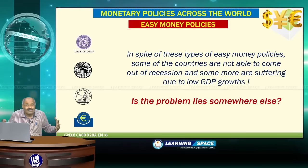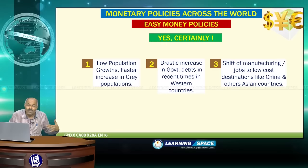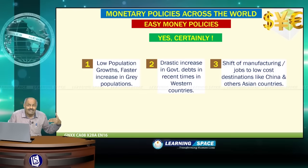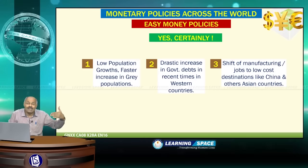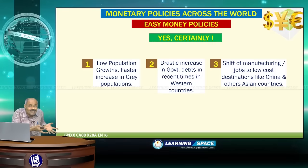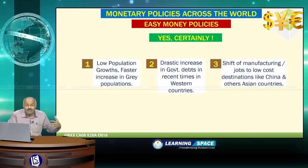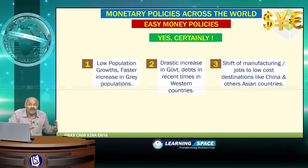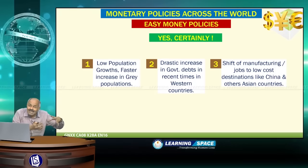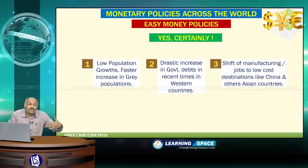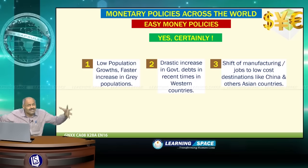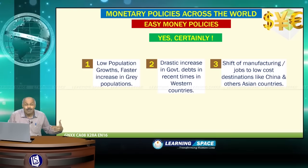The reasons why advanced economies are not growing despite easy money policies include: lower population growth and a rapidly increasing grey population; a drastic increase in government debts in western countries; and the shift of manufacturing and jobs to low-cost destinations like China, India, and other Asian countries. Software jobs shifted to India, manufacturing shifted to China, and car manufacturing moved to Korea and Japan. Unfavourable demographics and excessive debt-driven spending are key structural reasons for low growth in advanced economies.